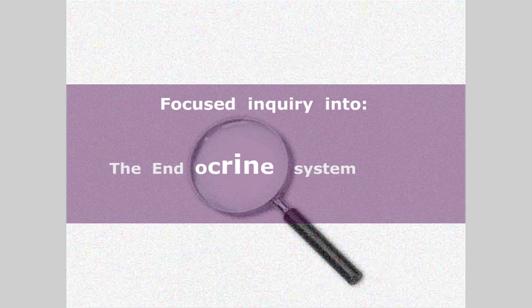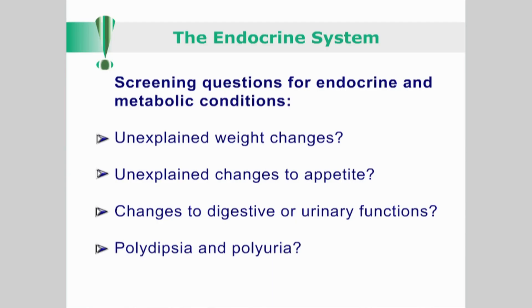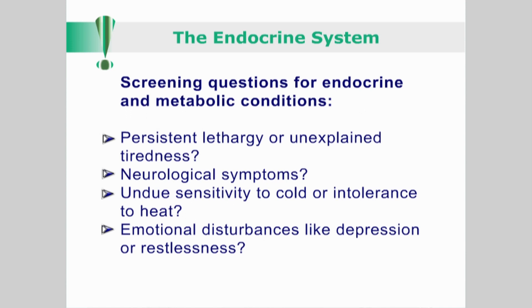When screening for suspected endocrine and metabolic conditions, consider the following: Are there any unexplained weight changes? Are there any changes in appetite? Are there any changes in digestive or urinary function? Does the patient have polydipsia and/or polyuria? Is there any lethargy or unexplained tiredness? Are there any focal or disseminated neurological symptoms like paresthesia? Has the patient developed undue sensitivity to cold or intolerance to heat? Are there any emotional disturbances like depression, anxiety and restlessness?